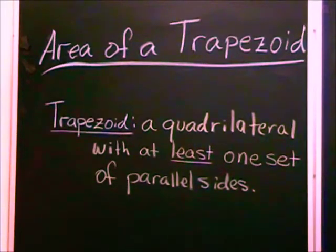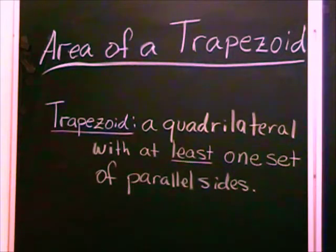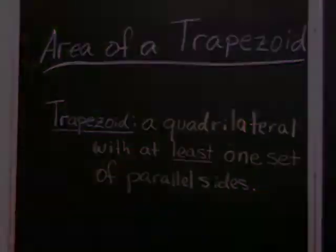A trapezoid is a quadrilateral, that's a four-sided figure, with at least one set of parallel sides.